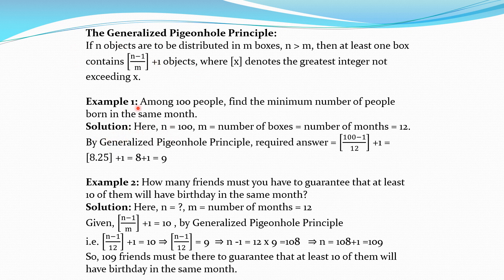Here we are distributing people into different months. So n, the number of objects, is 100 and m, the number of boxes, equals the number of months, which is 12. By the Generalized Pigeon Hole Principle, at least one box will contain floor of (100-1)/12 plus 1 objects. This is 99 divided by 12, which equals 8.25. We take the greatest integer not exceeding 8.25, which is 8. So 8 plus 1 is 9. Therefore there are minimum 9 people born in the same month.